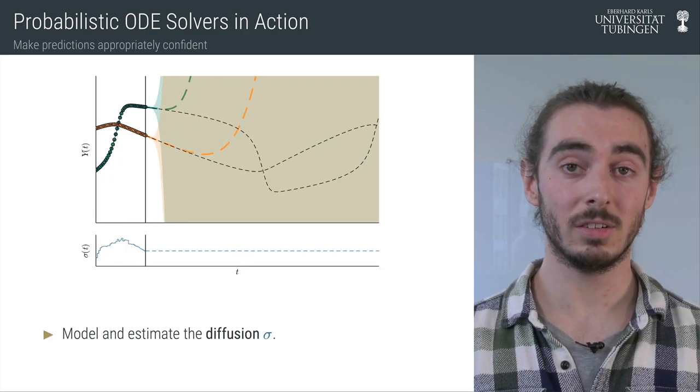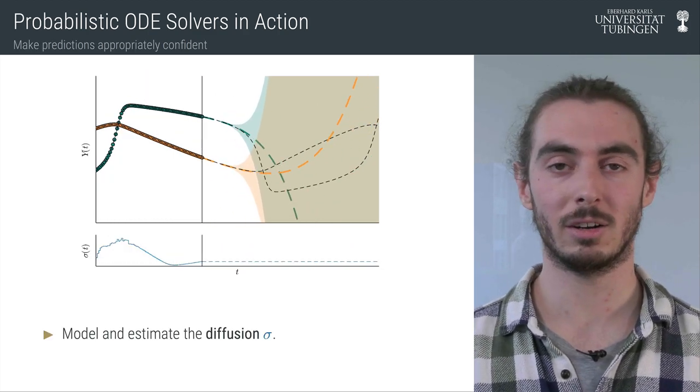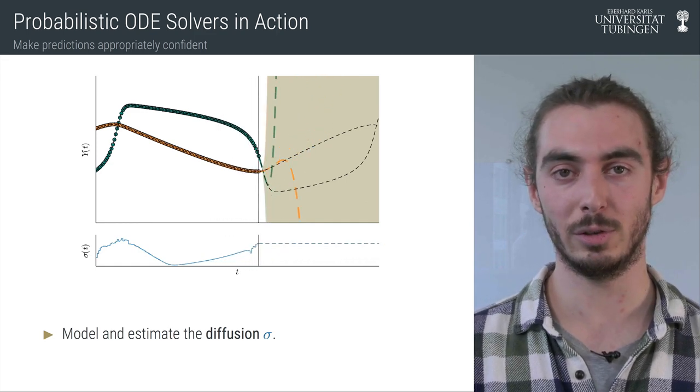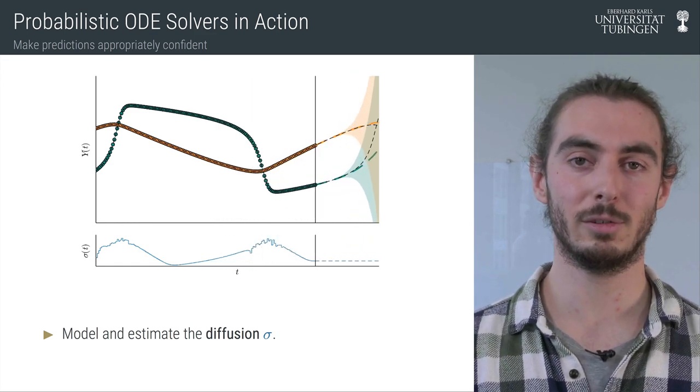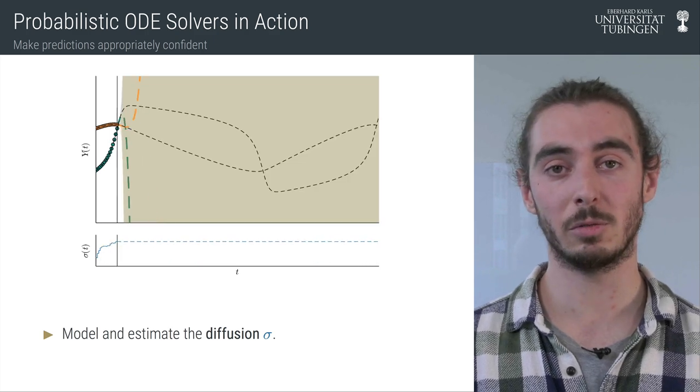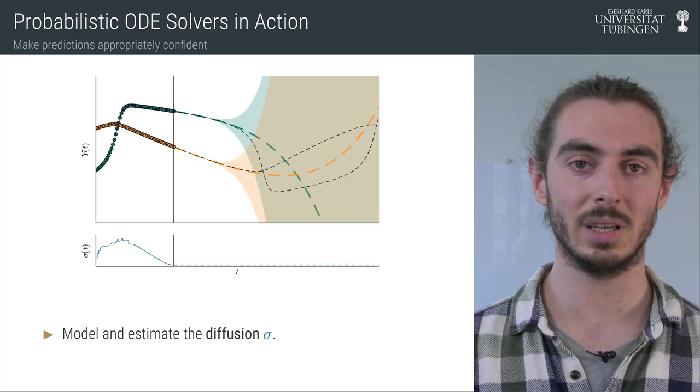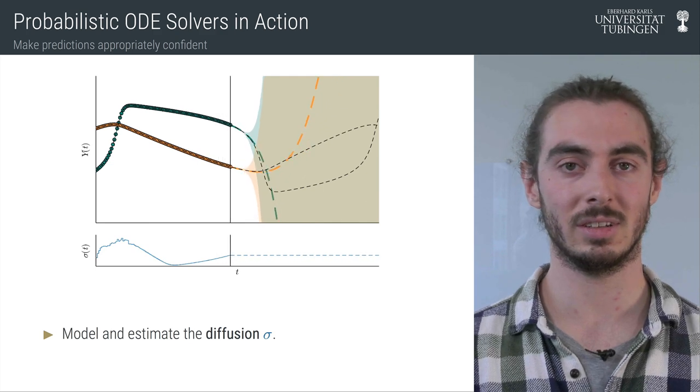As it turns out, there is a free parameter in our prior process called the diffusion, which directly influences these uncertainties. This parameter needs to be estimated to provide calibrated uncertainties.